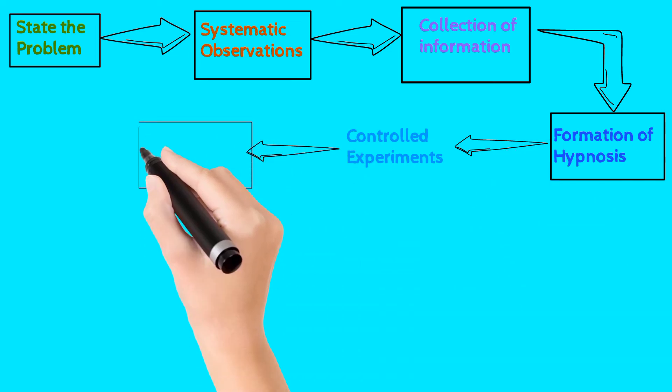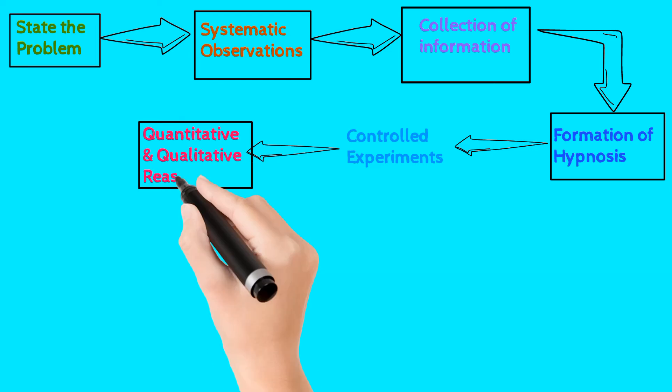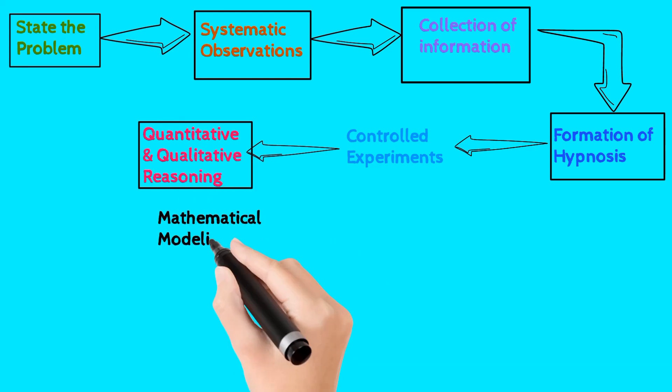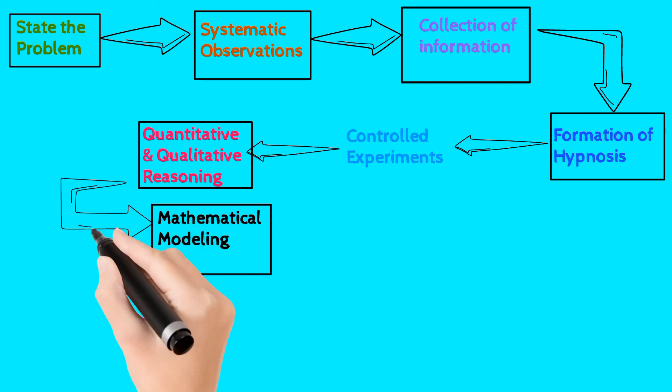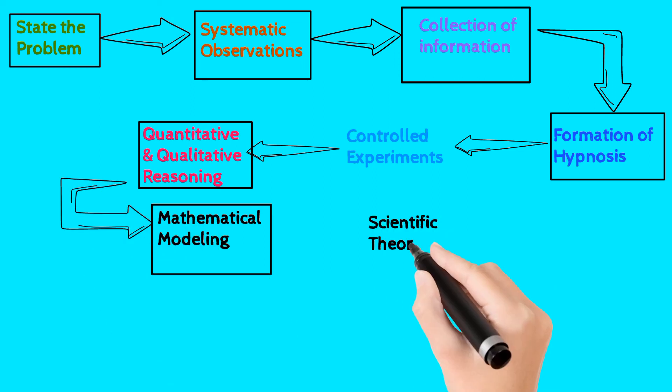the experiments are done in a controlled manner. Next step is quantitative and qualitative reasoning is done. A mathematical modeling is formed.